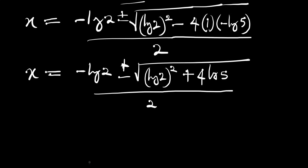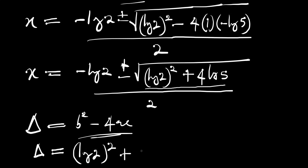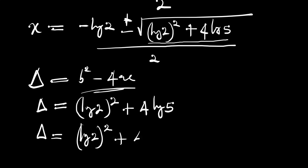At this point we can work with our discriminant. The discriminant equals b squared minus 4ac. From what we have inside the square root, the discriminant equals log of 2 to the power of 2 plus 4·log of 5.